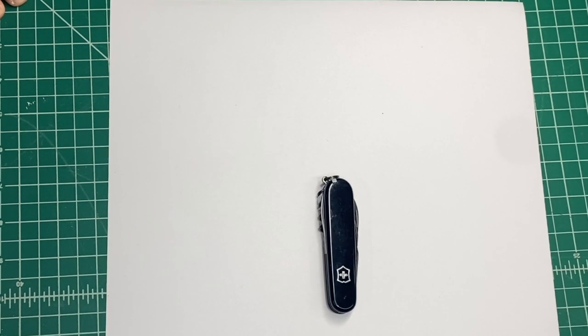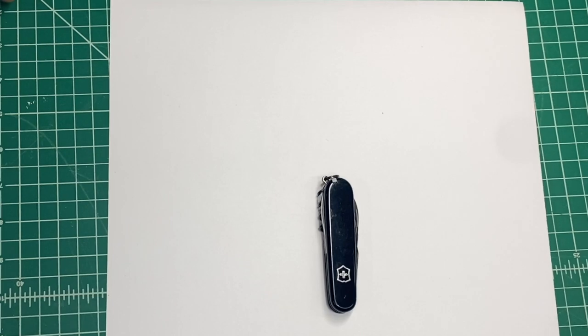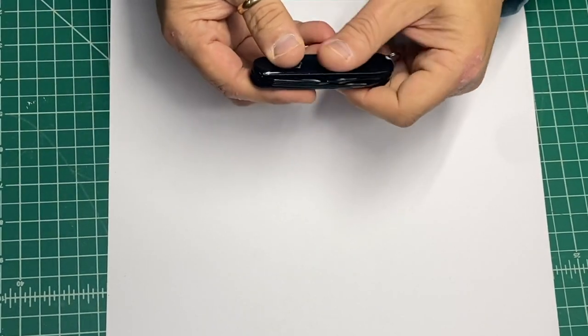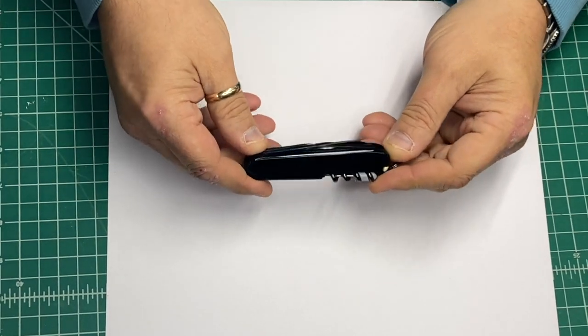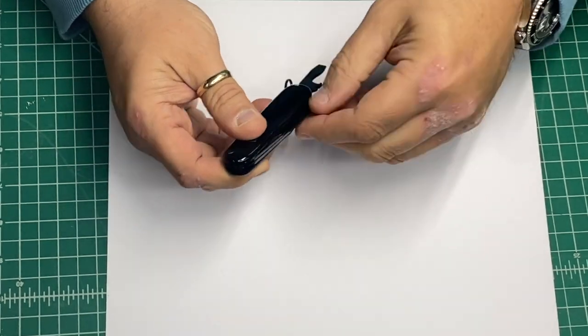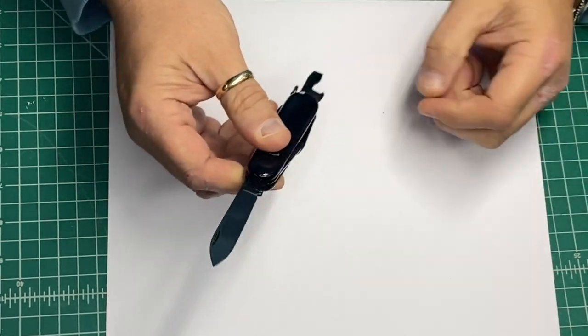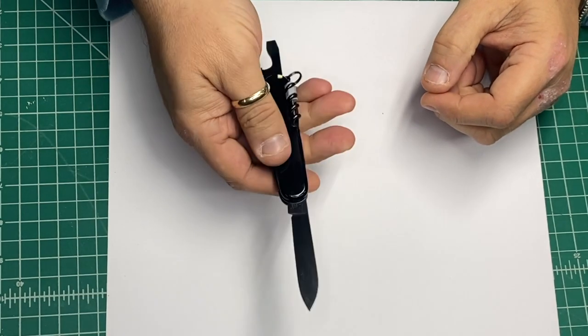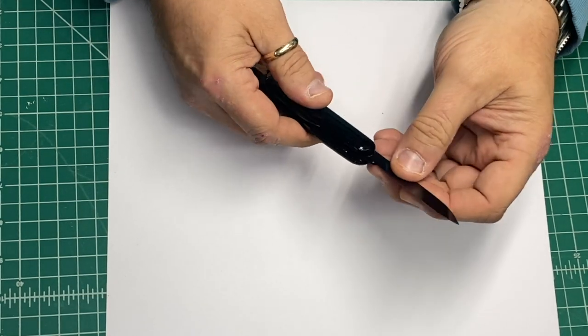So we've got a new toy, which is the Spartan Onyx Black. I've been carrying it since Christmas. Love this thing. It's got the black blades. I mean, it's absolutely gorgeous.